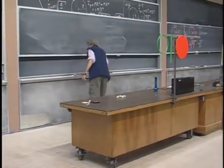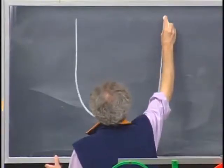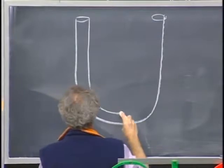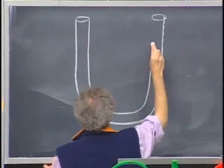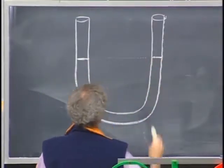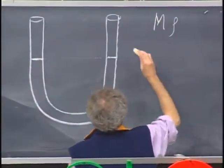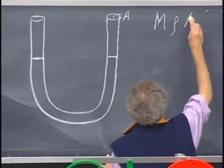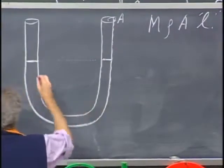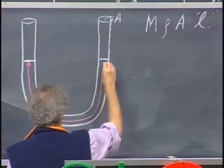If I have here a tube which has everywhere the same cross-section, open on both sides, and I put a liquid in here in equilibrium, just like that. The liquid has mass m, density rho, the area of the tube is A, and the length of the liquid is L.